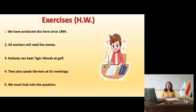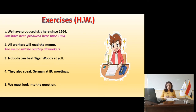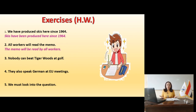Slide 16, number 3: 'Nobody can beat Tiger Woods at golf.' Nobody is the subject, can beat is the verb, Tiger Woods is the object. Begin with Tiger Woods, then for the modal 'can' use 'cannot be' — changed to negative because the original subject is 'nobody.' Then past participle: beaten. Result: 'Tiger Woods cannot be beaten at golf.' We don't need to add 'nobody' at the end as it adds no information.